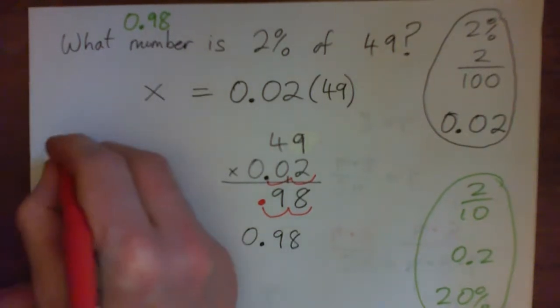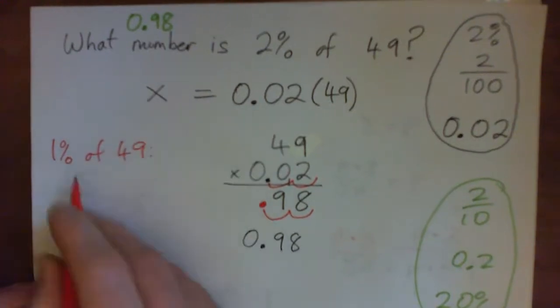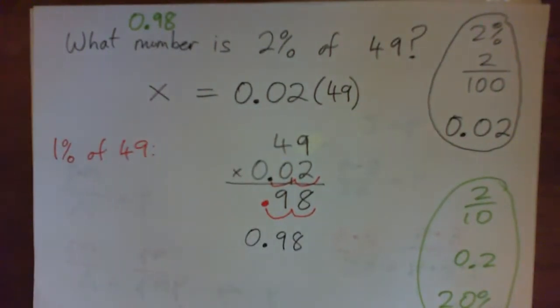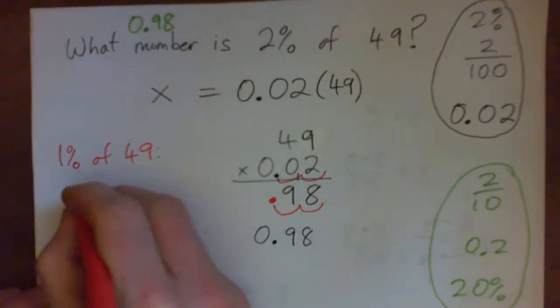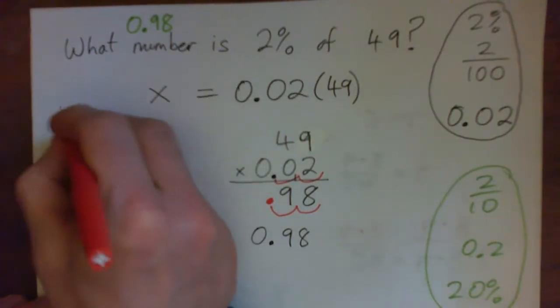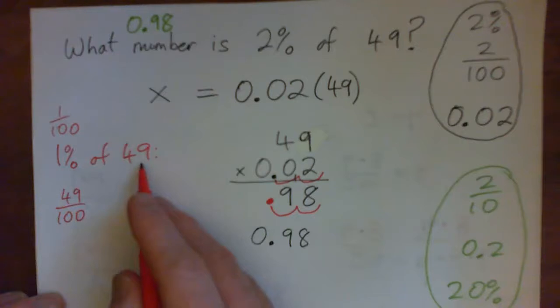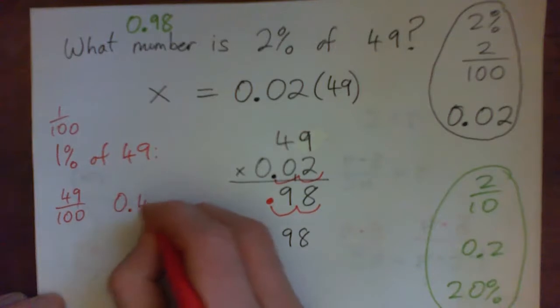Just for fun, write this down. Give me 1% of 49. 1% of 49 is 49 over 100, by the way. It's getting 100th, because 1% is 100th. So it's 100th of 49. And 49 over 100 is 0.49.